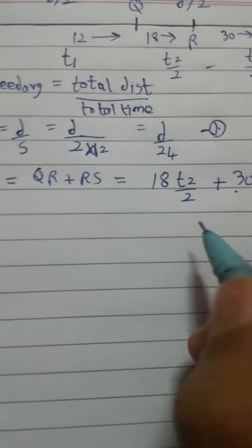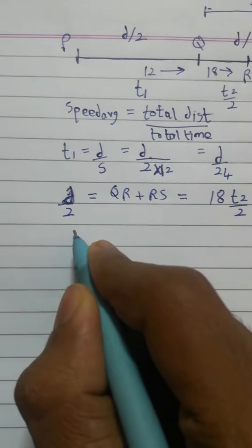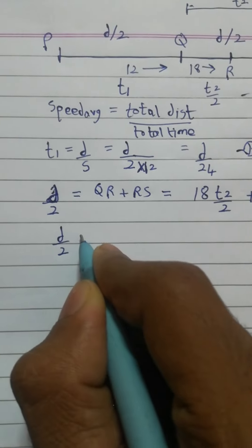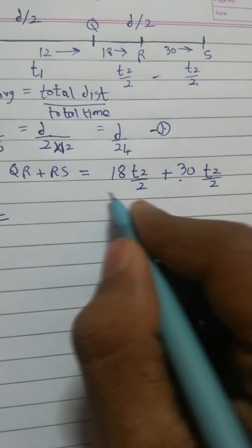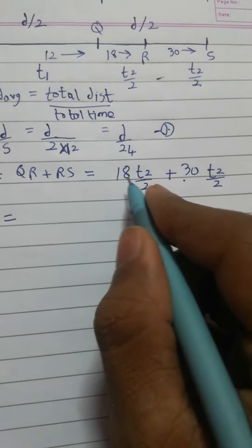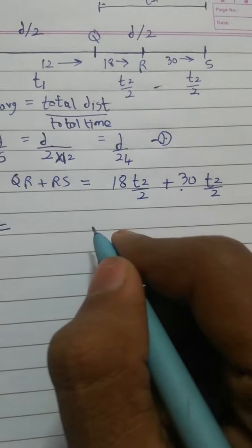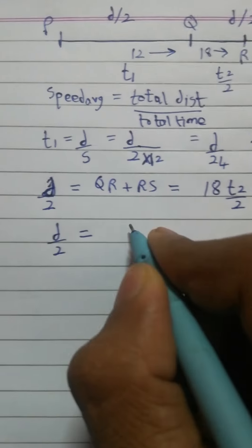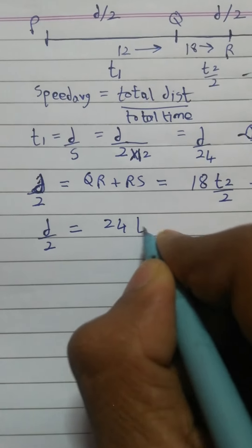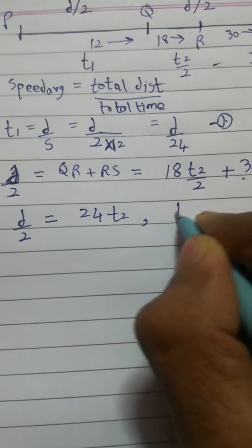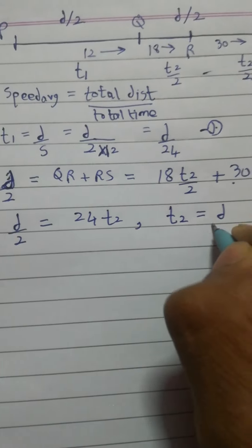So now we have D by 2 equal 9T2 plus 15T2. 9T2 plus 15T2 is simply 24T2. So I will write it here 24T2. T2 would be equal to D by 48. Just cross multiply 24 downside.